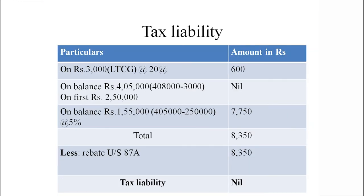For tax liability — his age is 40 years so he falls under the first slab. Special incomes like long term capital gain are taxable at 20% first: 3,000 rupees at 20% equals 600. Balance income is 4,05,000. Out of 4,08,000, the first 2,50,000 is nil. The remaining second slab — 1,55,000 rupees — is taxable at 5%, giving 7,750. Total tax liability is 8,350. His income is less than 5,00,000, so he is eligible to claim relief under Section 87A — maximum 12,500 or actual 8,350, whichever is less. So the entire 8,350 rupees is deductible as rebate under Section 87A, and there is no health and education cess to add. His tax liability is nil.